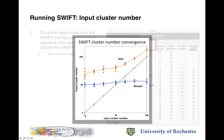In this diagram, we varied the input cluster number over a very wide range from 5 up to 500. Over that range, if we used a very low input cluster number, then Swift did a very large amount of splitting up to this orange line here. If we used a very high number of input clusters, then Swift didn't do very much splitting but did a large amount of merging. In all cases, the results converge on a very uniform 50 or 60 clusters for this particular sample.